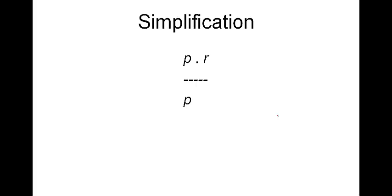Simplification may be the simplest rule: if you have 'p and q' as a premise, you can conclude p, or you could also conclude q. If you know you can have cake and ice cream, then you know you can have cake and you know you can have ice cream.